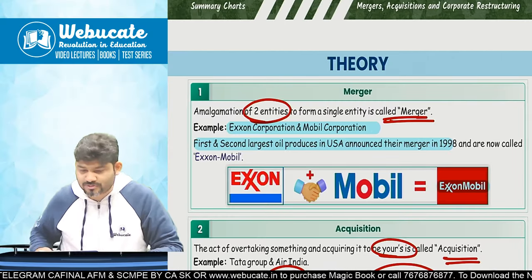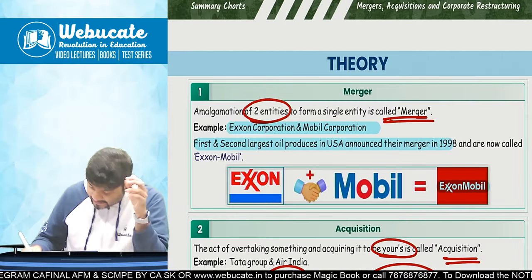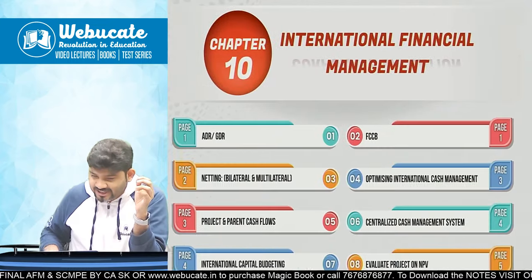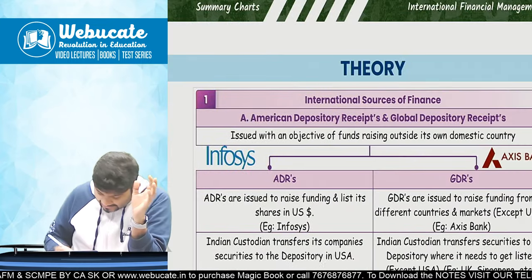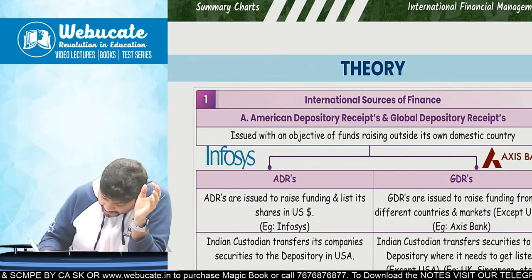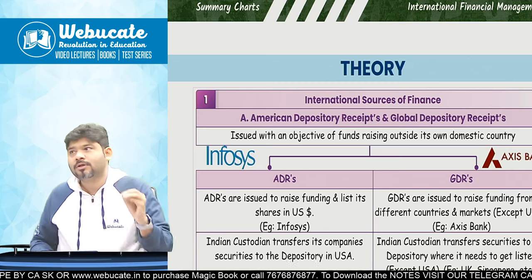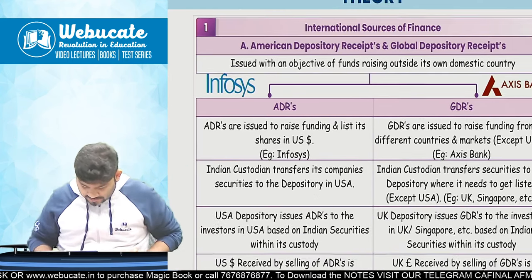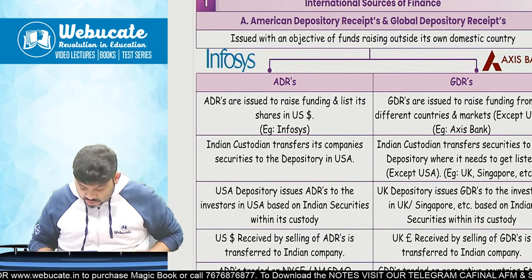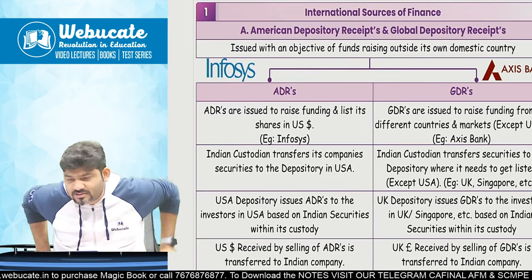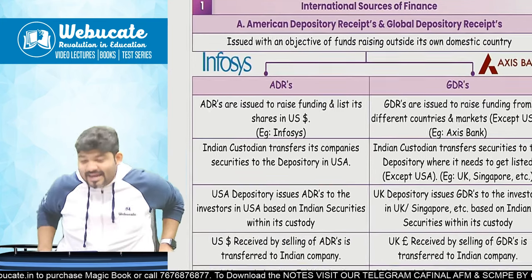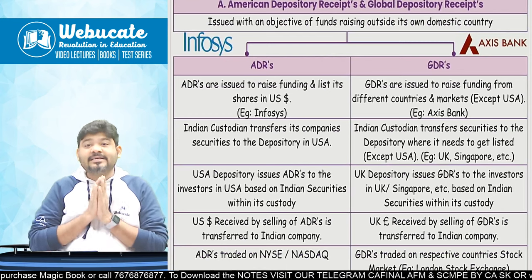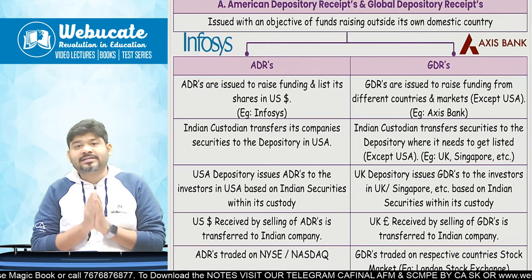Now we move on to the next chapter: International Financial Management. This is again a very important chapter from both MCQ and theory perspective. The first question is what is an ADR and GDR — there is a very high probability of this coming in the examination. What exactly are depository receipts?